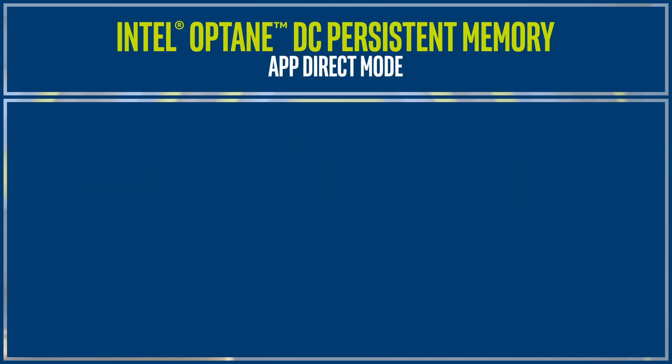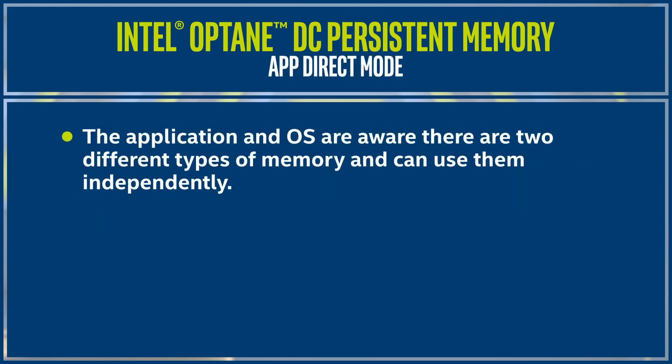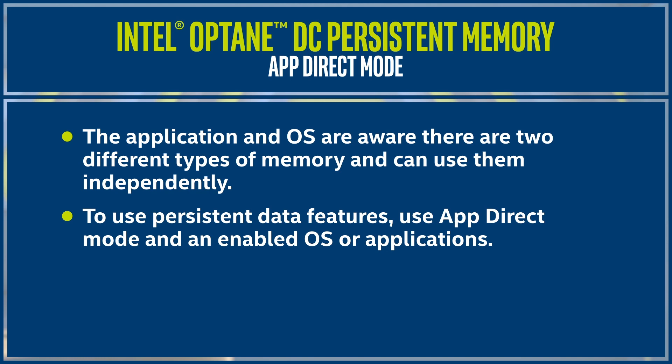In App Direct Mode, the application and OS are aware there are two different types of memory and can use them independently. If you want to use the persistent data features, you have to use App Direct Mode with an enabled operating system or application.